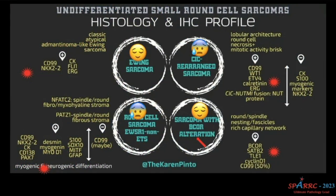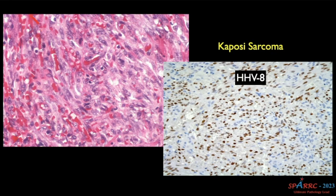Ewing sarcoma has four members — important because prognosis differs. Ewing sarcoma and sarcoma with BCOR alteration have good prognosis, whereas CIC-rearranged sarcoma and round cell sarcoma non-ETS have bad prognosis. For Ewing sarcoma: CD99 and NKX2.2. For CIC-rearranged tumor: WT1 and ETV4. For non-ETS type: muscle markers myogenin and MyoD1. For BCOR-altered sarcoma: BCOR. For Kaposi sarcoma — any spindle cell lesion with extravasated RBCs and history of immunodeficiency — HHV8 will be positive.